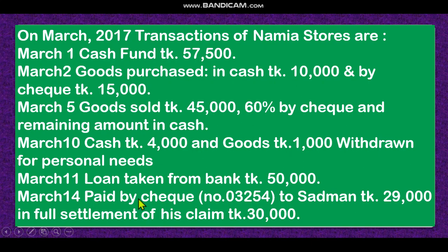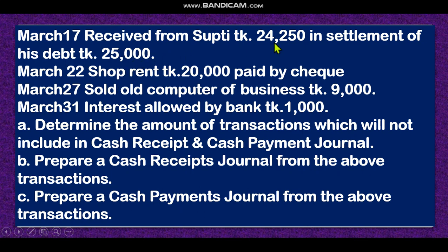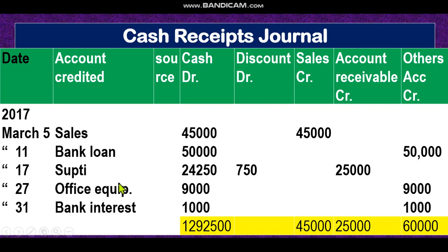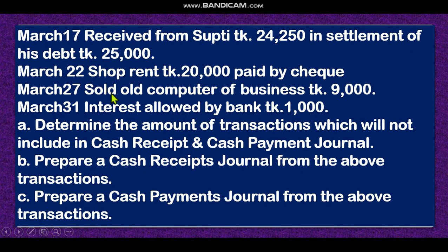Paid by check — that is cash payment, not cash receipt journal. Received from Shupti 24,250 in full settlement of his debt of 25,000. Shupti is our debtor — accounts receivable of 25,000 — but we received only 24,250, so 750 is discount allowed. In the cash receipt journal: cash received 24,250, discount 750, accounts receivable 25,000.